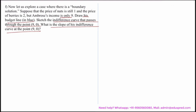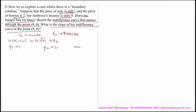First, x1 is the units of nuts and x2 is the units of berries. The utility function is u(x1, x2) = 4√x1 + x2. Let P1 be the price of nuts, P2 the price of berries, and M the income. So P1 = 1, P2 = 2, and M = 9.